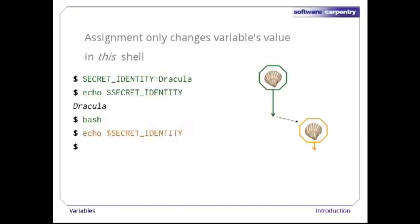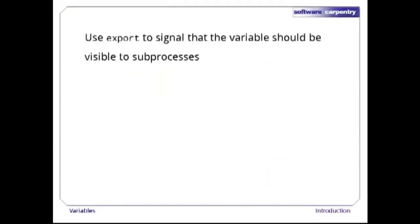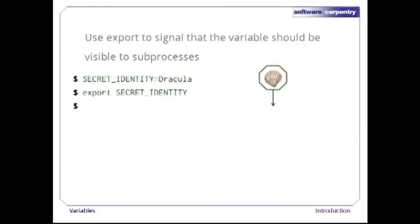If we exit the child shell and return to the original, we can see that yes, the variable does exist. If we really want the shell to pass a variable to the processes it creates, we must use the export command. Let's try the secret identity example again — after giving secret identity a value, we give the shell the command 'export secretidentity'. Note, by the way, that it's not 'export $secretidentity' with a dollar sign — if we typed that...